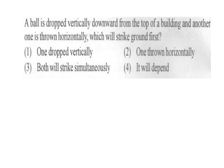A ball is dropped vertically downwards from the top of a building and another is thrown horizontally. Which will strike the ground first? The answer is option 3: both will strike simultaneously. Using the same formula, v depends on h, so both reach the ground at the same time.